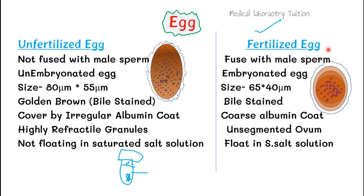The fertilized egg is fused with male sperm and contains an embryo inside. Its size is 65 microns in length and 40 microns in width. Both egg types are bile stained — this is commonly asked in exams. The fertilized egg has a thick, coarse albumin coat with a segmented ovum at the center and a crescentic (empty) space, which is why it floats in saturated salt solution.